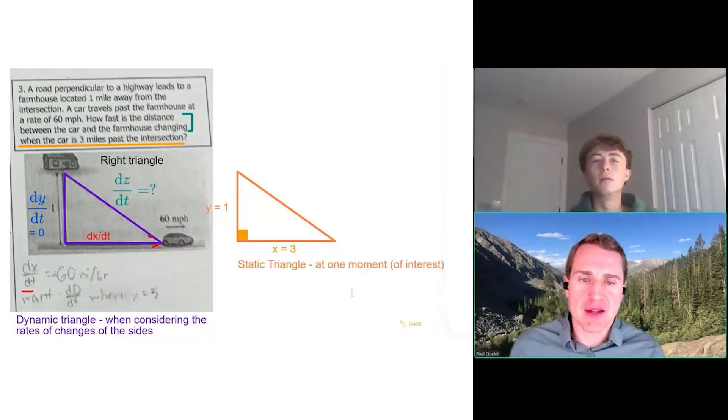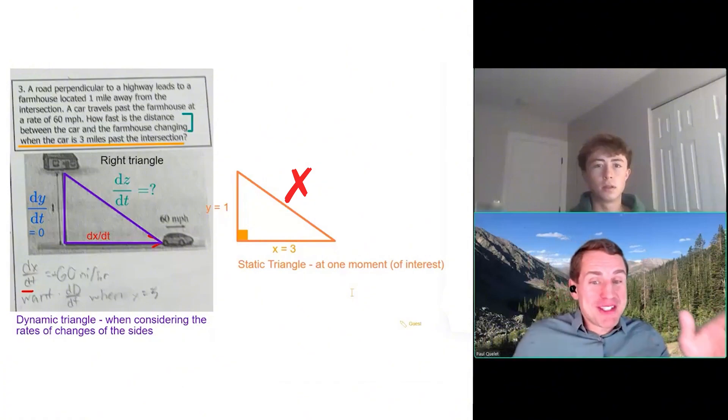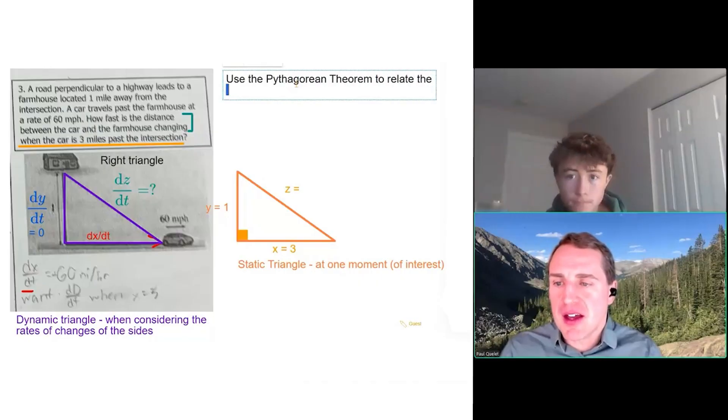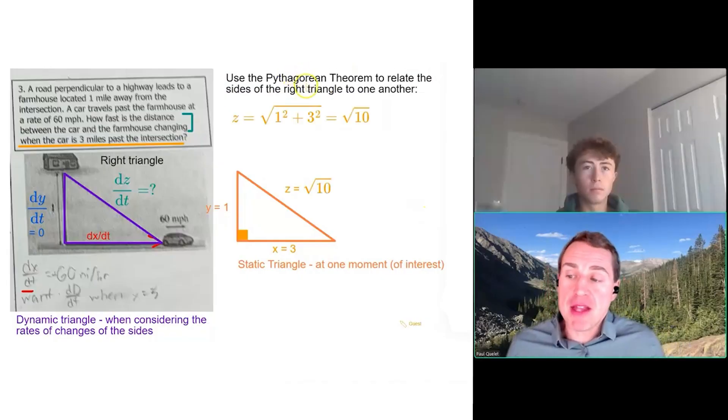Since we're looking for dz/dt, do you think it might be useful to find what missing side? The hypotenuse. Yeah, the hypotenuse on the static triangle, z. Does that make sense? So use the Pythagorean theorem to relate the sides of the right triangle to one another. I already kind of mentioned this.